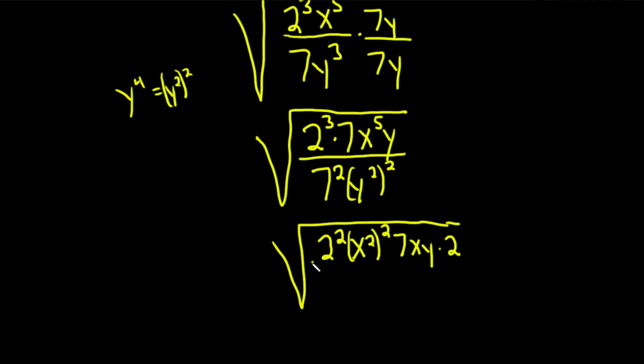And we have the x, and the y hangs out. All of this is over 7y squared squared. So pretty messy.